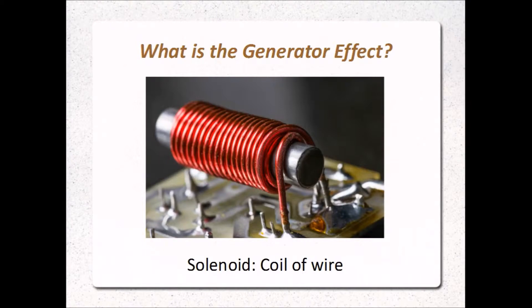This is easiest to show with a solenoid, a piece of wire wound into a coil. The solenoid you see here has a core of iron in the middle, which strengthens the magnetic field created when you pass a current through it.